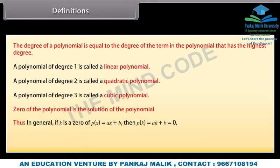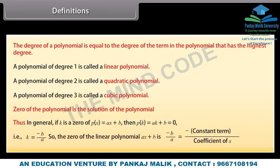Thus, in general, if k is a zero of p(x) which is equal to ax plus b, then p(k) is equal to ak plus b which equals 0. That is, k is equal to minus b upon a. So the zero of the linear polynomial ax plus b is minus b upon a, which equals minus constant term upon coefficient of x.